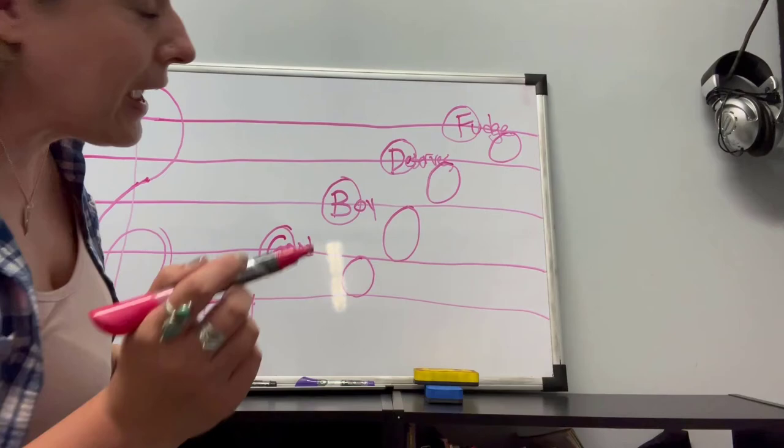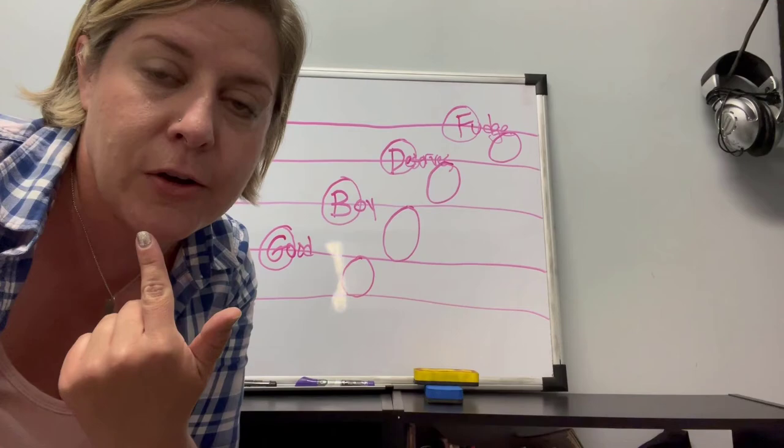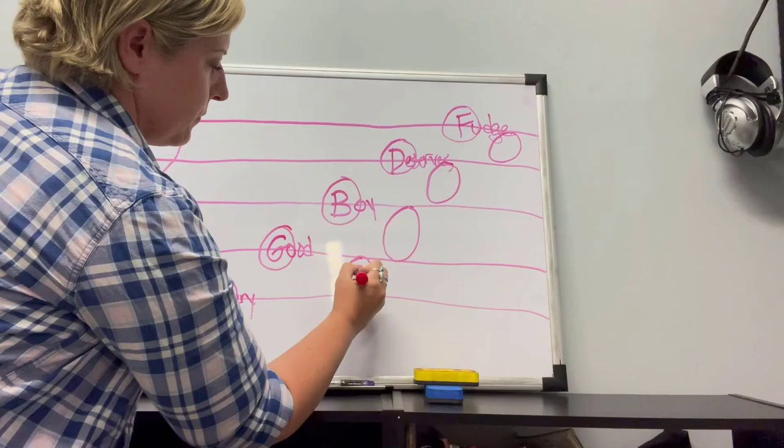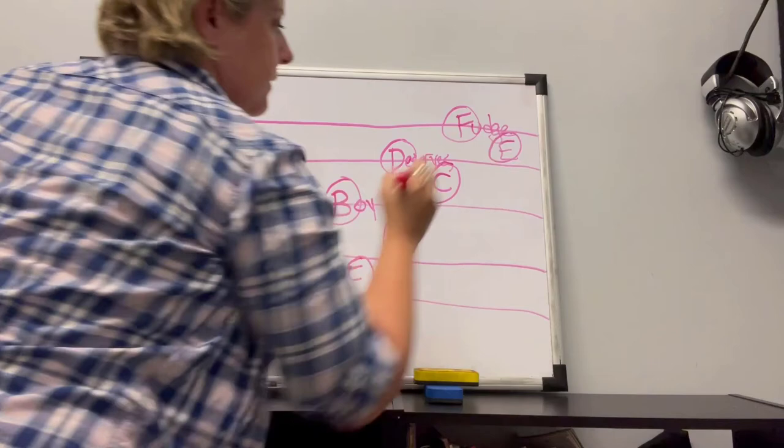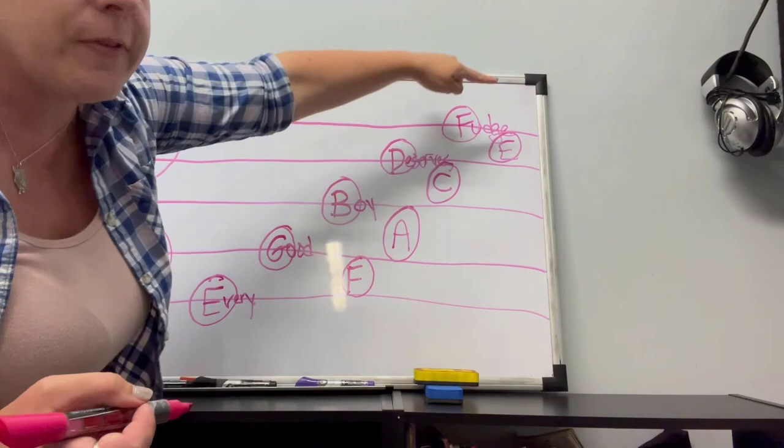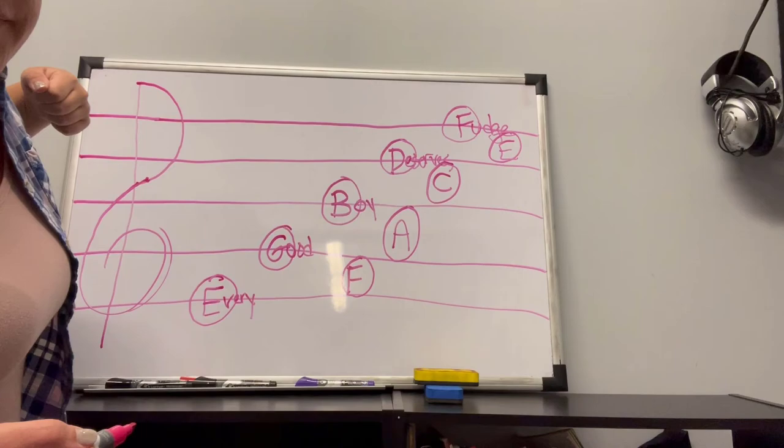Now this is even easier to remember. All you have to do is remember the word FACE. The word face. How do we spell face? F-A-C-E. So where this was a sentence (Every Good Boy Deserves Fudge), all you have to do is just spell the word face from the bottom to the top: F, A, C, E.